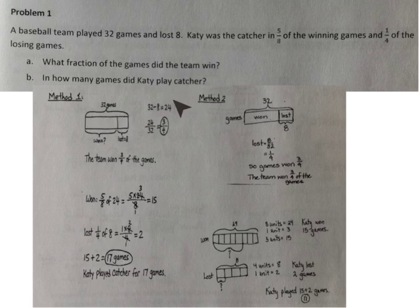To determine that, we have to divide the number of games that they won by the number of games played altogether, 24 divided by 32. The simplified fraction is 3/4, so the team won 3/4 of the games.